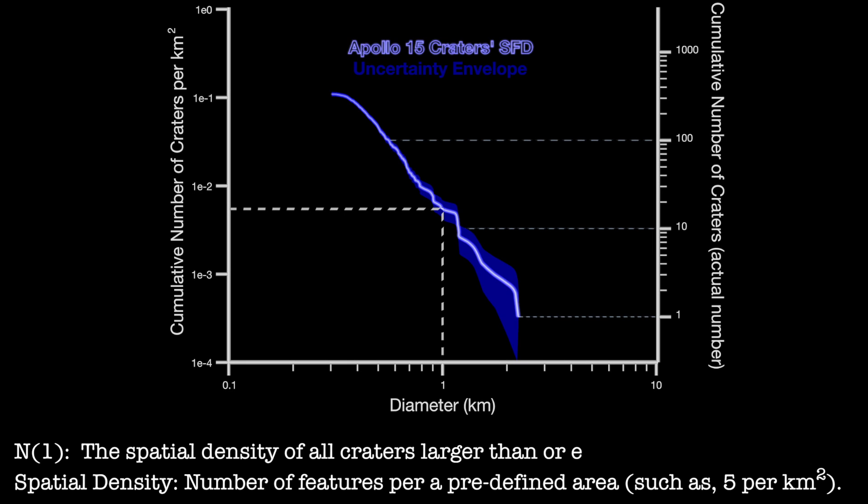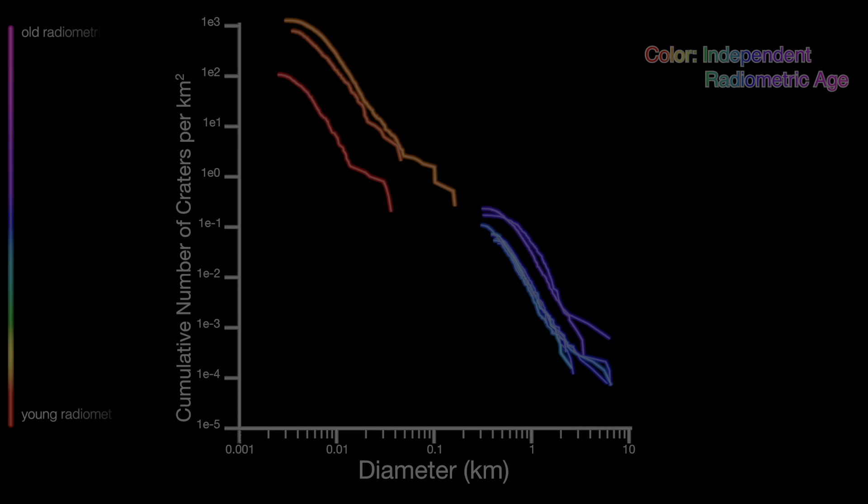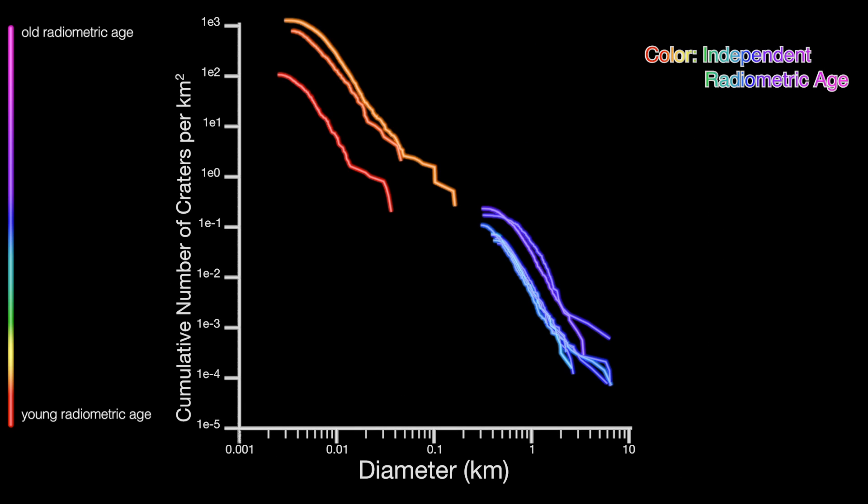This one kilometer diameter point is important for the lunar chronology. It's for this and only this spatial density, the density of craters on a surface that are larger than one kilometer that the lunar chronology is defined. It's so important that we have our own abbreviation for it, N1. This means that we need N1 for all of the other landing sites.